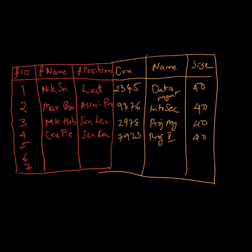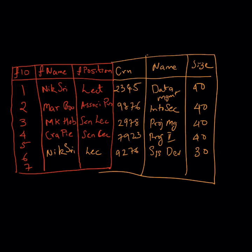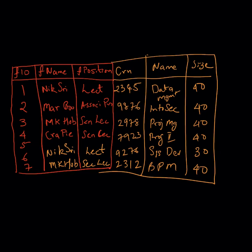However, faculty members don't just teach one course — they may teach multiple courses. If Nick Tree teaches an additional course with CRN 9276 on Systems Development, we need to replicate his faculty information in a separate row. Similarly, MK Hube teaches another course on BPM with 40 students, so MK Hube's information is also replicated. We start to see that storing faculty data and course data in the same table leads to problems.